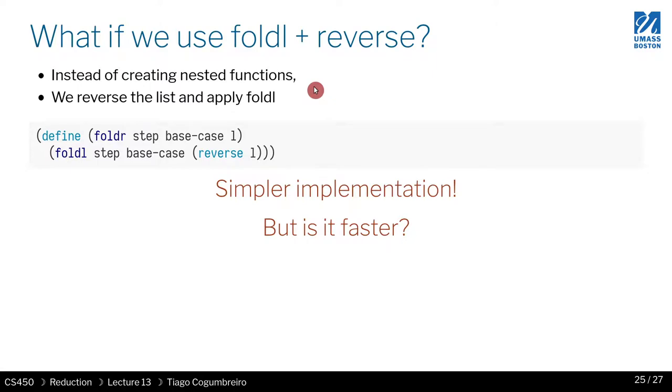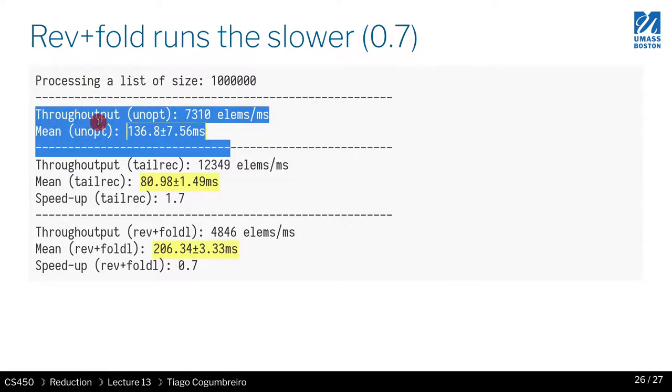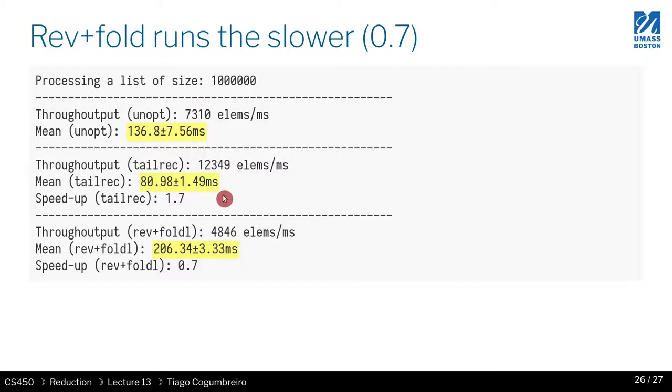At least in the Racket version I tried, it was slower than the original unoptimized version. So you really lose all the benefits. What you want is to use the optimized version directly if you can.